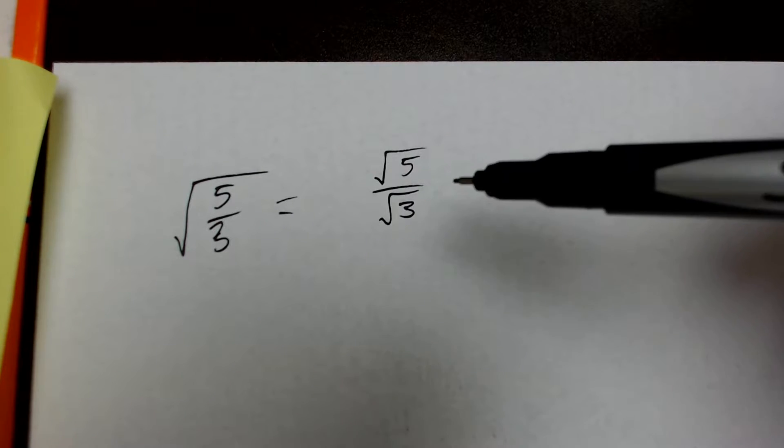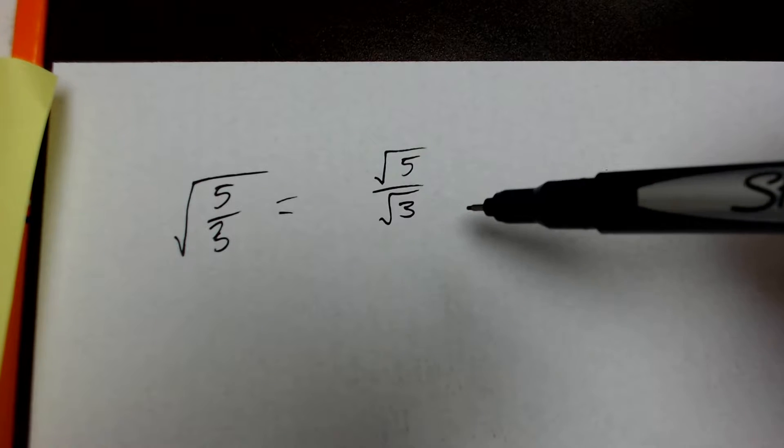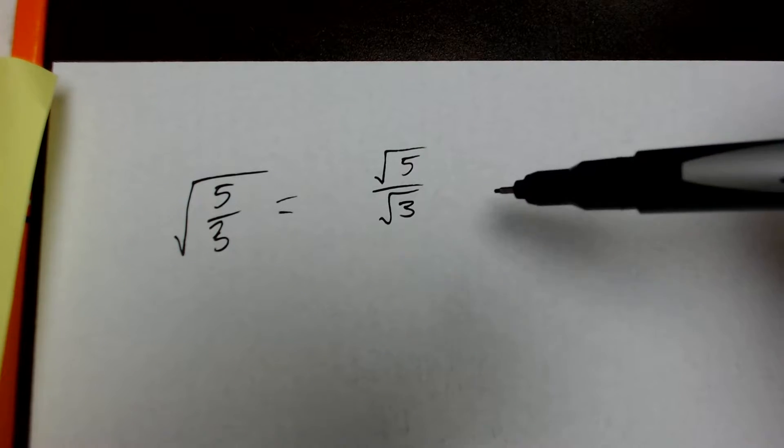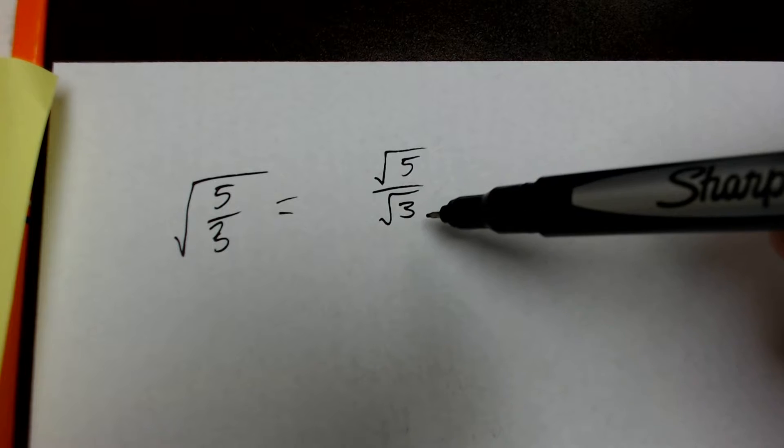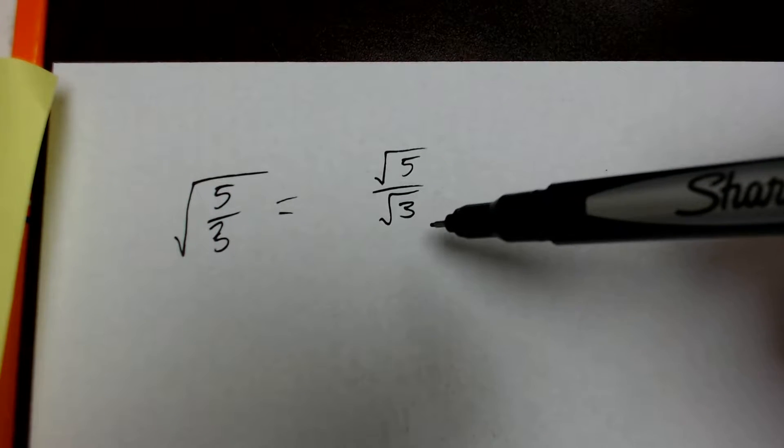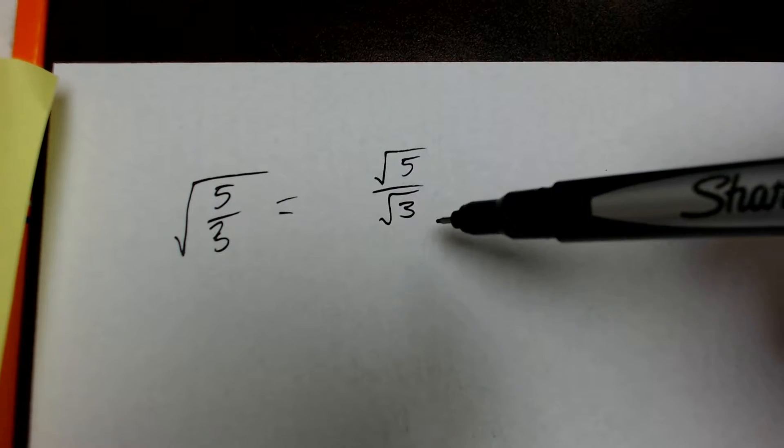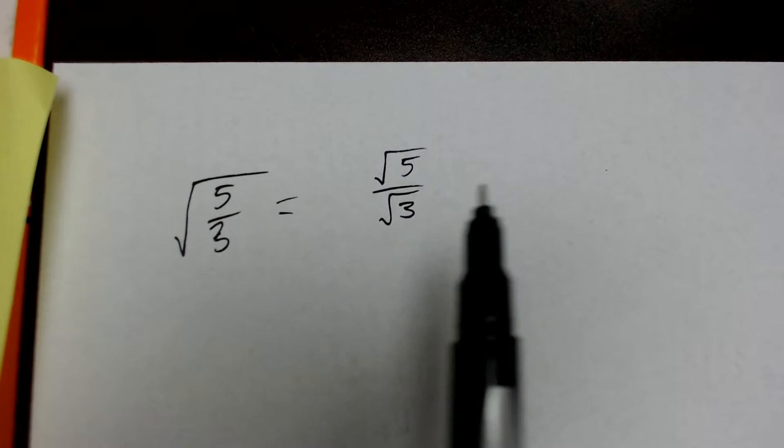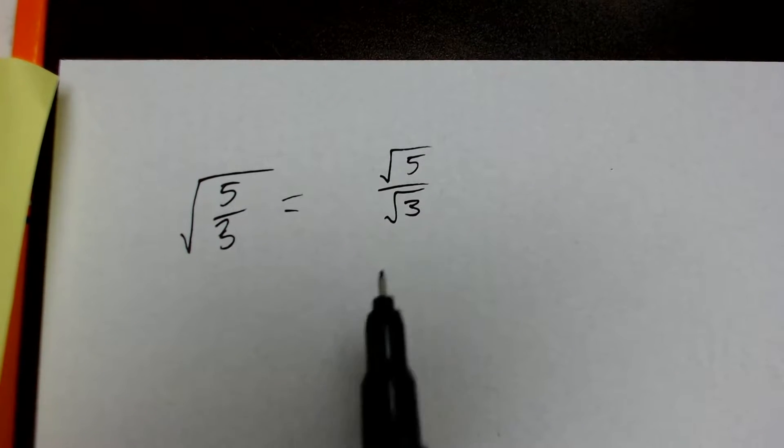then it skews our answer because we don't know exactly what the square root of 3 is. So, we have a very good idea, but in the end, we'll never be able to accurately represent square root of 3 as a decimal number or a fraction of integers. So, since it's irrational, we want to make it a rational number.